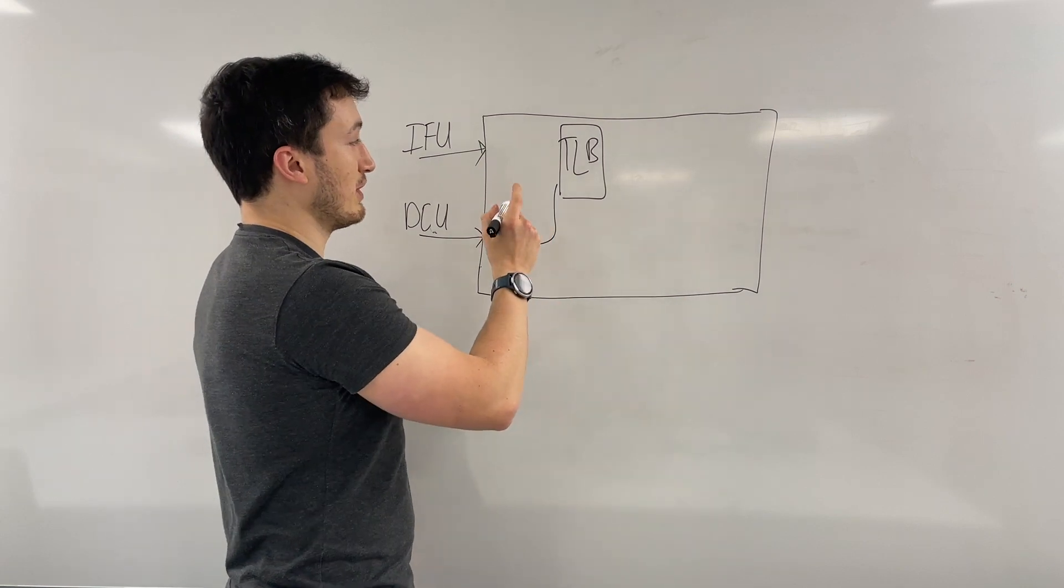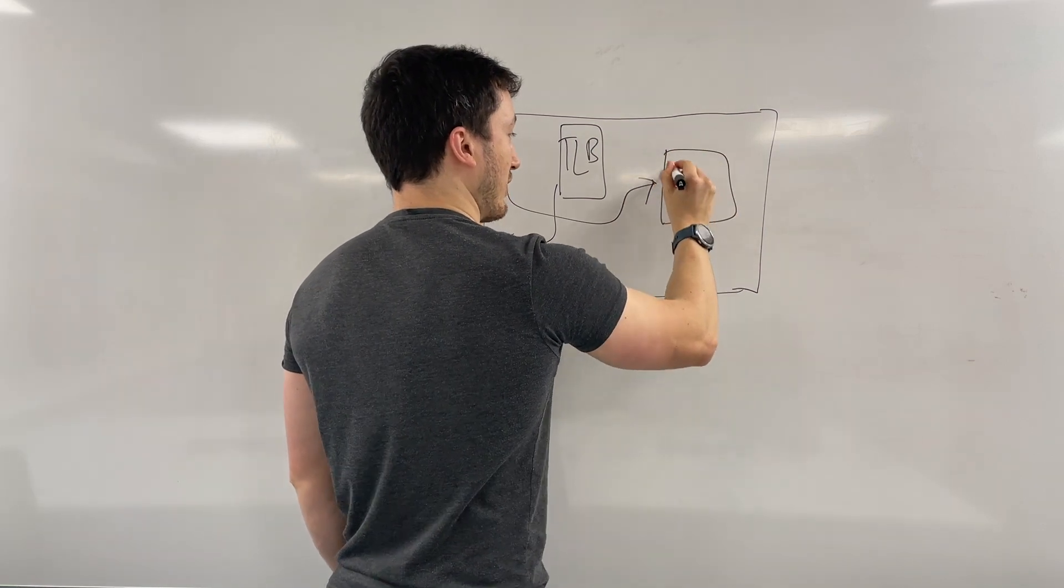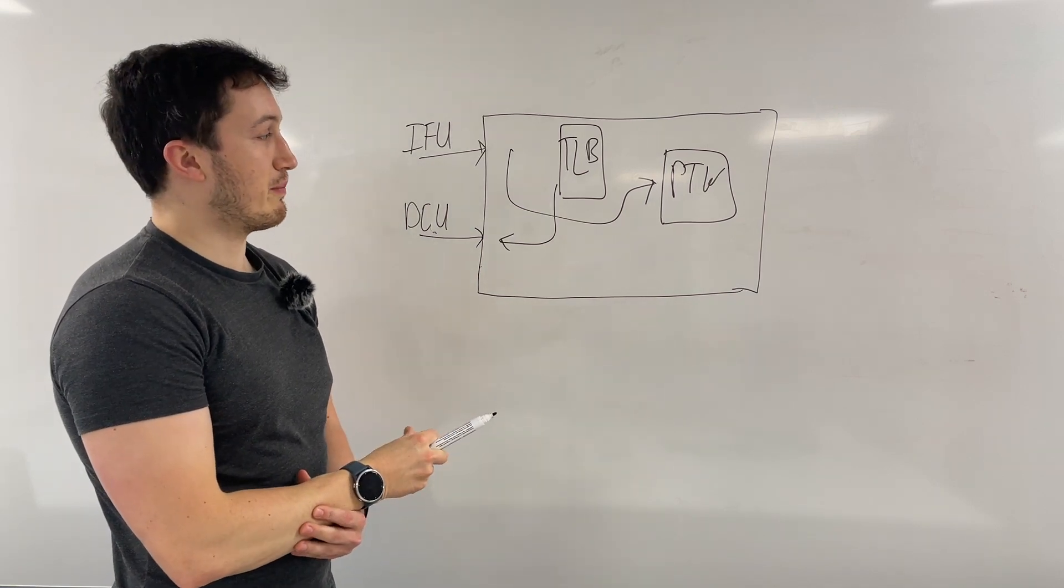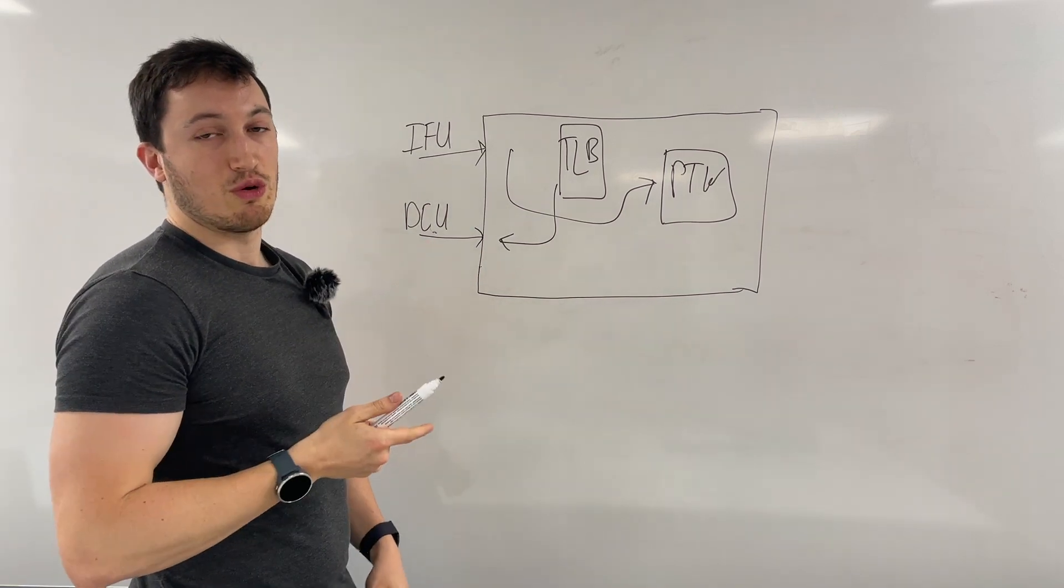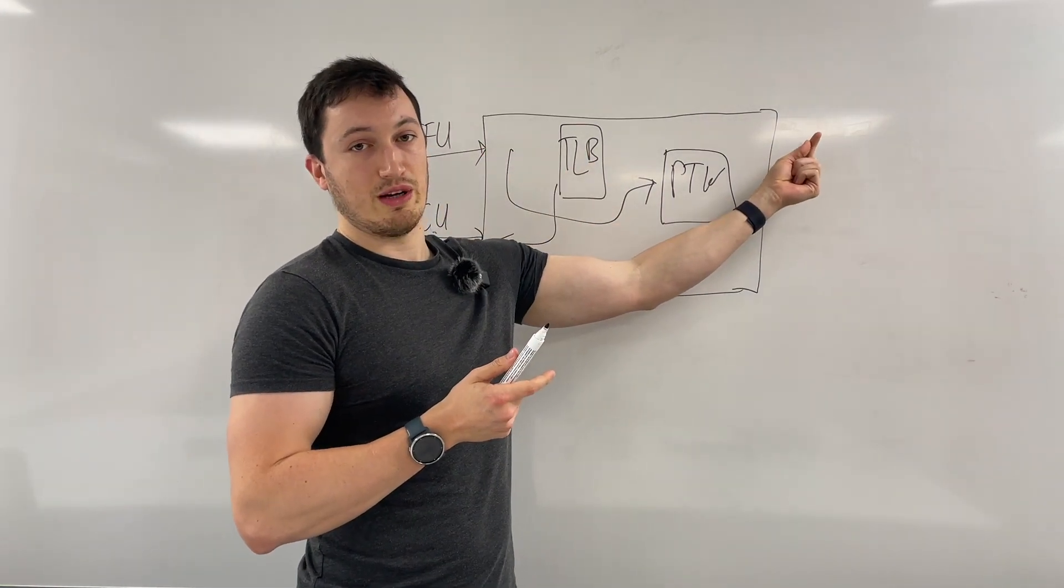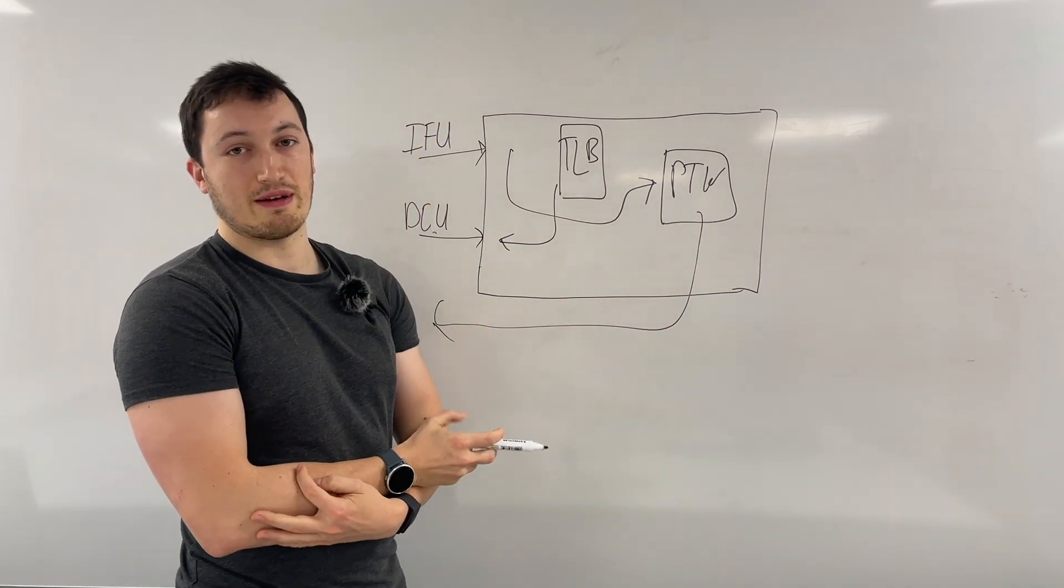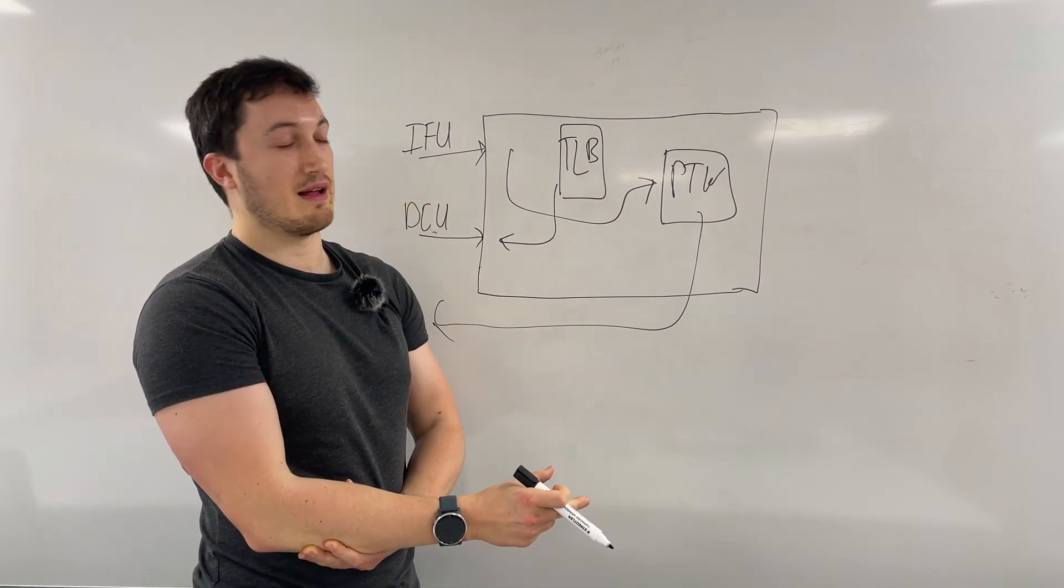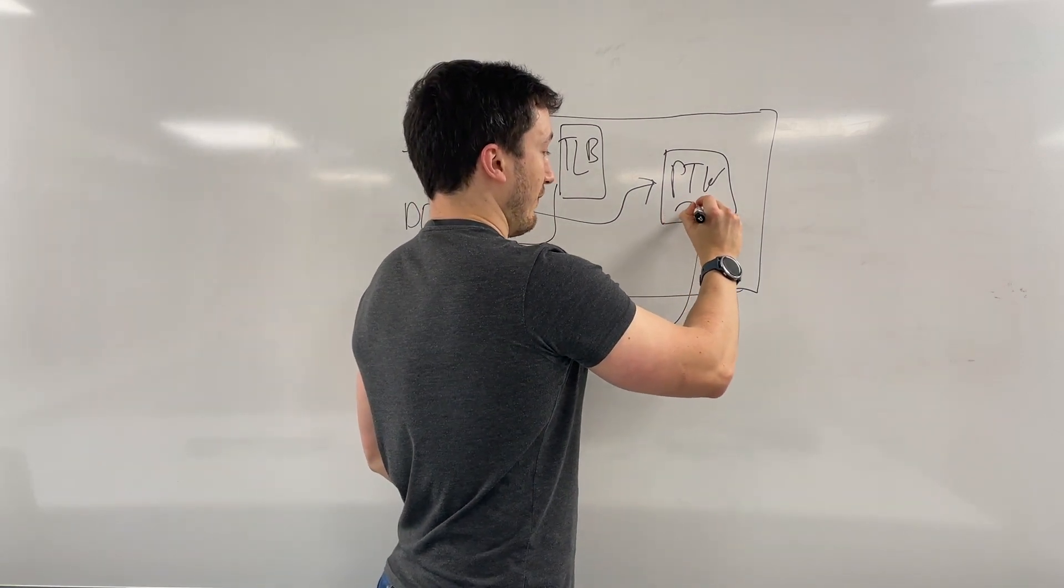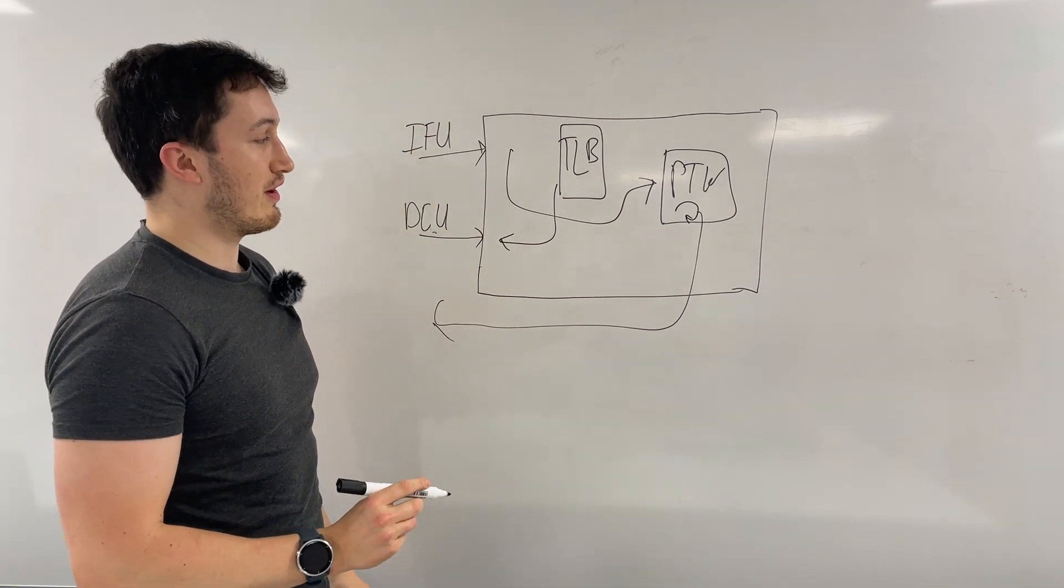But if it misses and we don't have it in the TLB, then we need to send the request over to our page table walker to do the page table walk. And so how RISC-V is designed is that page table walks are an iterative process where you take part of the request and you send it off to the memory. So we actually send this back to the DCU. We send it back to the DCU and the DCU will then go and fetch from memory whatever the next step of the page table walker is. And then we iterate through and we step through the various levels of the page table to walk through and then eventually get a request.